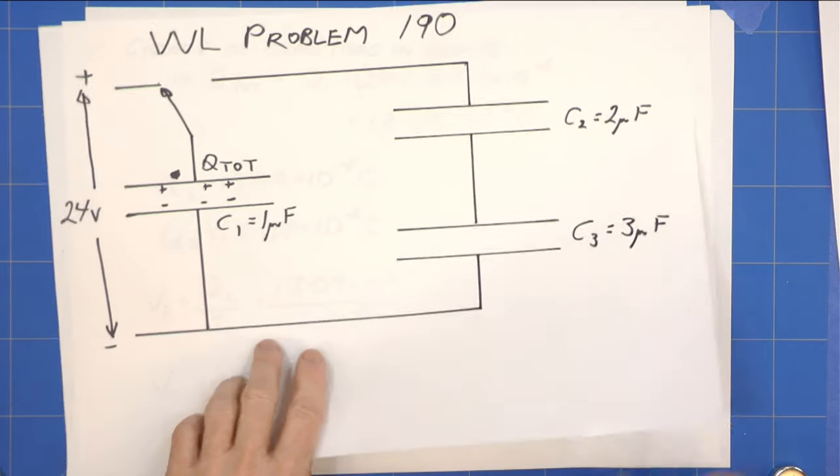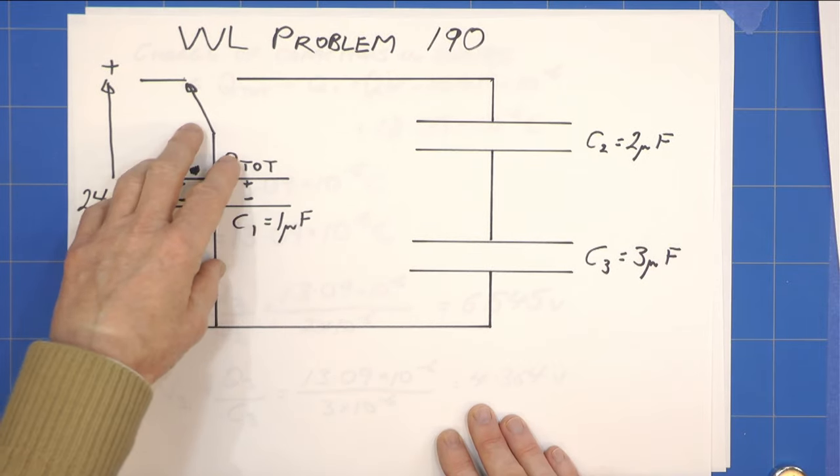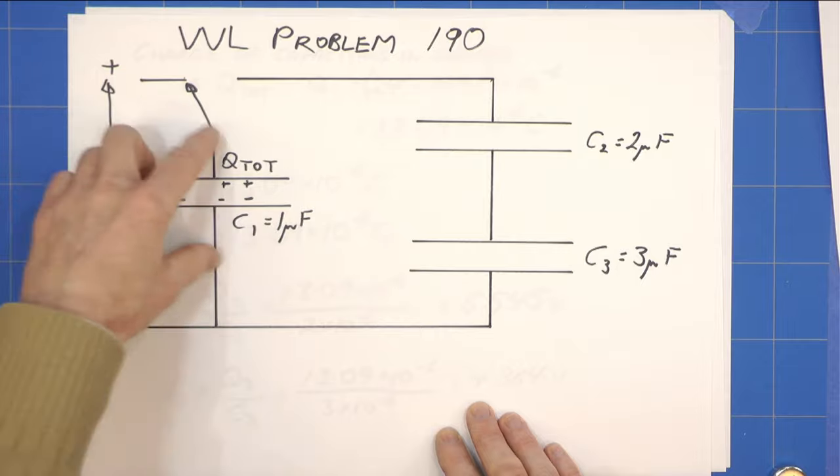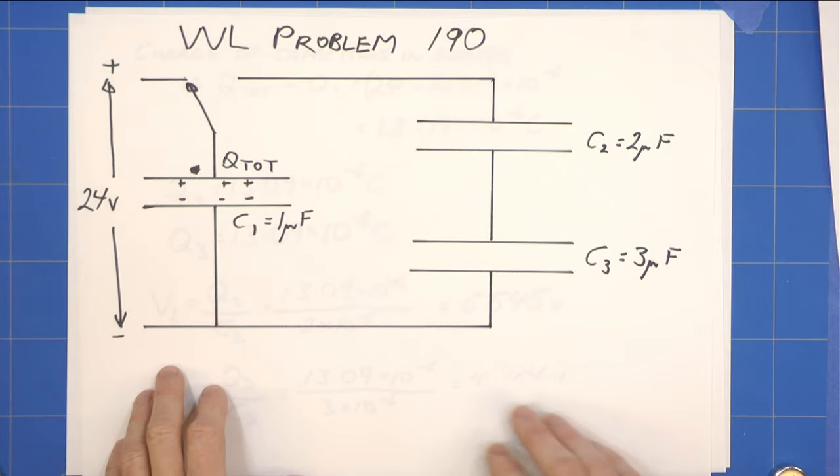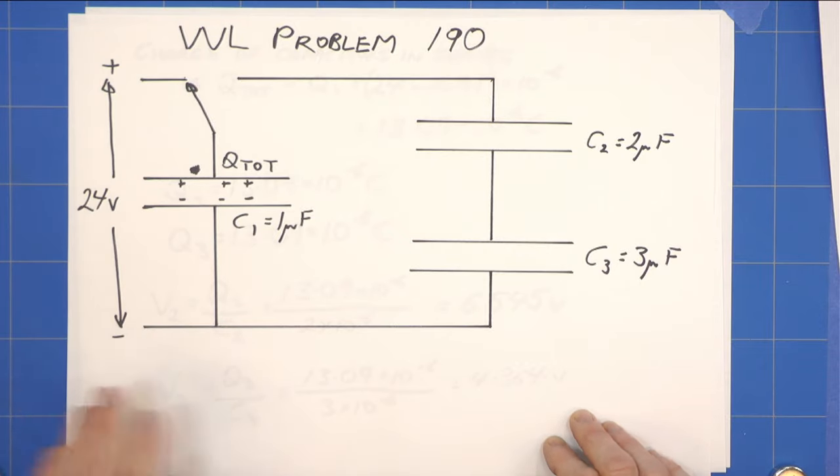Walter Lewin's problem 190. We charge up a capacitor with 24 volts across it, one microfarad capacitor, and then we throw the switch. That 24 volts we can forget about.